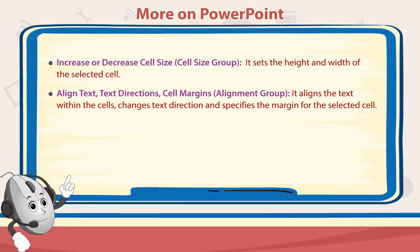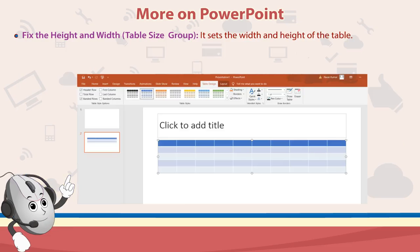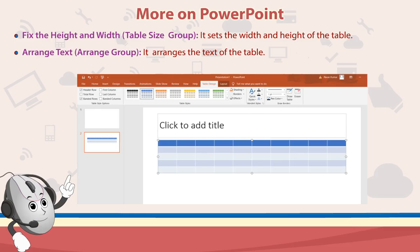The Alignment group also changes text direction and specifies the margin for the selected cell. Fix the Height and Width: The Table Size group sets the width and height of the table. Arrange Text: The Arrange group arranges the text of the table.